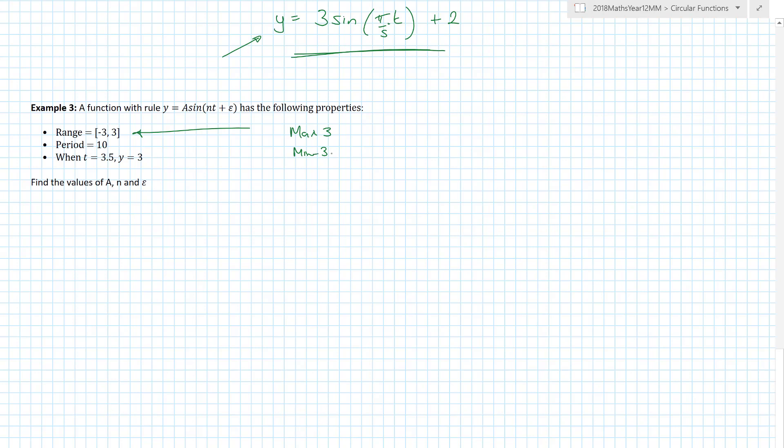That just means the maximum is 3, the minimum is minus 3, which means that actually the amplitude can be found out as being 3. So before we start we got the amplitude. Period of 10, great, thank you very much for giving me the period. That's 2π over n, so we know that n is 2π over 10 and that once again is π on 5.